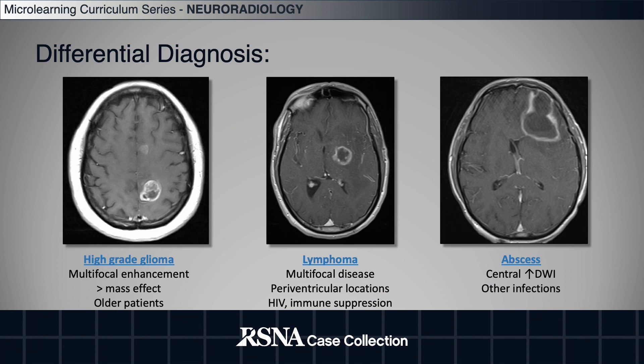Differential diagnoses include high-grade gliomas, lymphoma, and abscess. High-grade gliomas often show multifocal enhancement, more mass effect, and present in older patients. Lymphoma often has multifocal lesions that are periventricular in location and present in immunocompromised patients. Abscesses show increased central DWI signal and are associated with other infections.